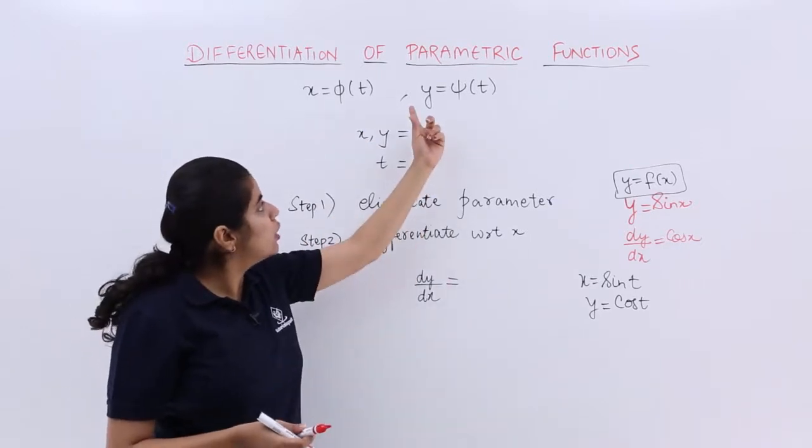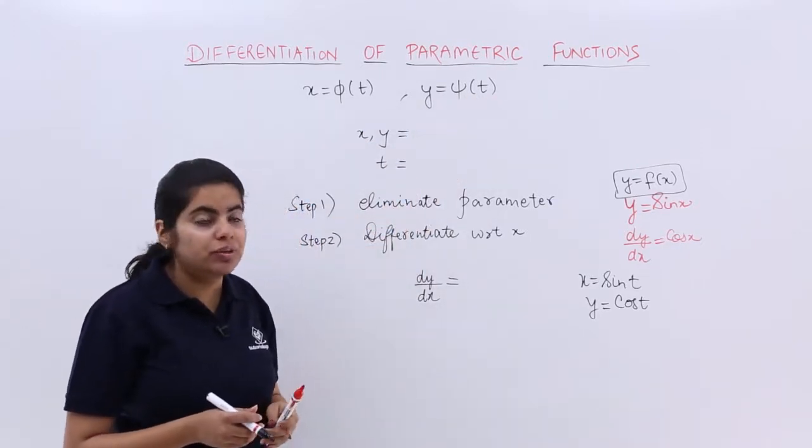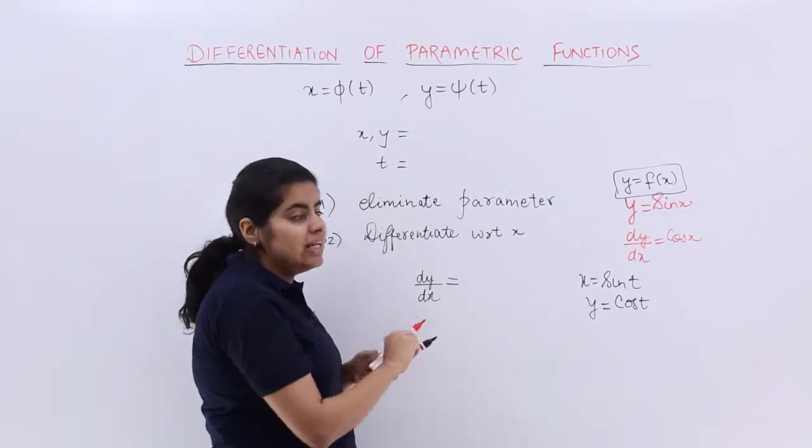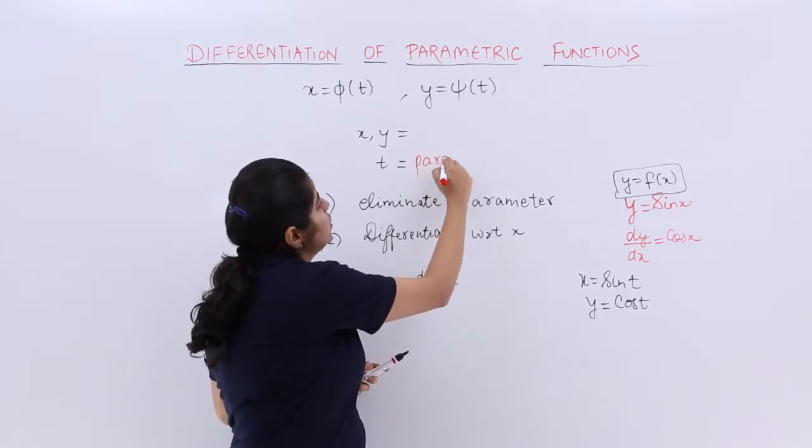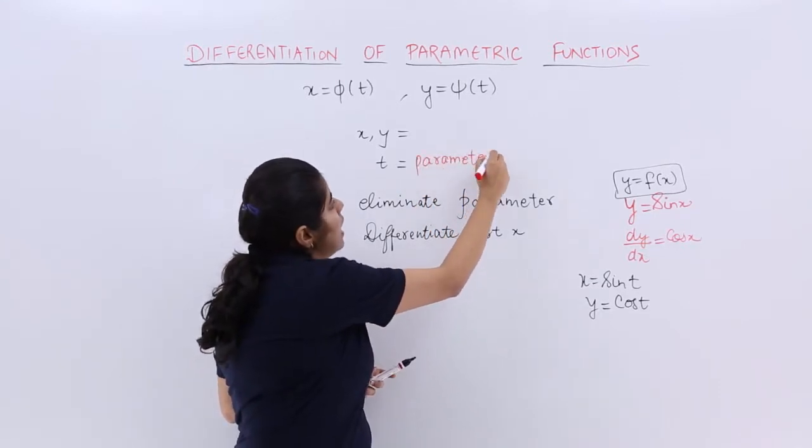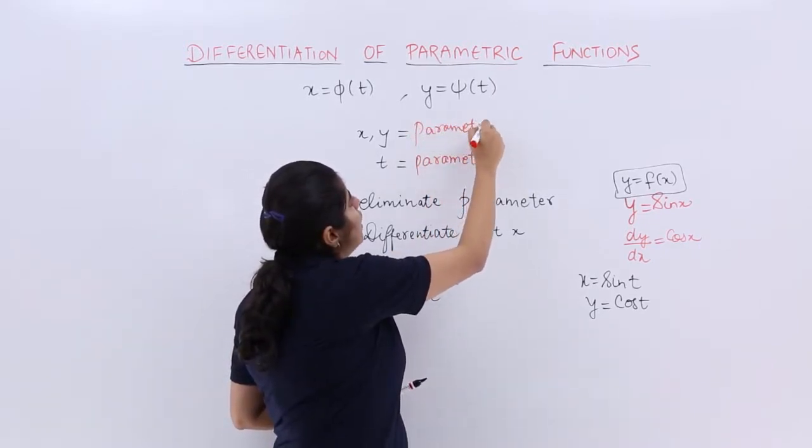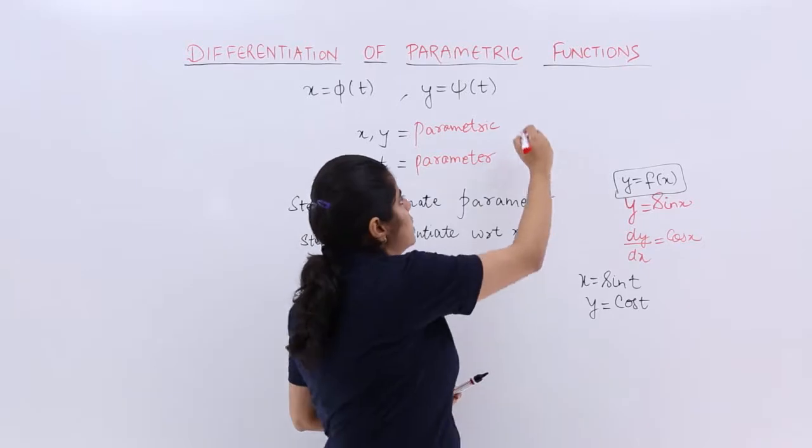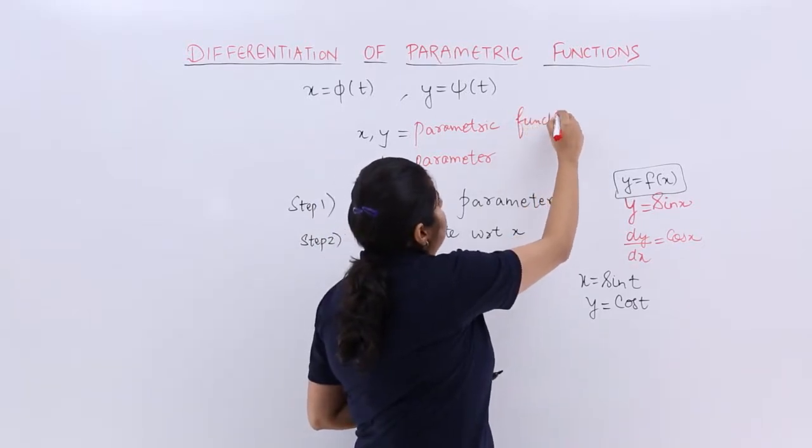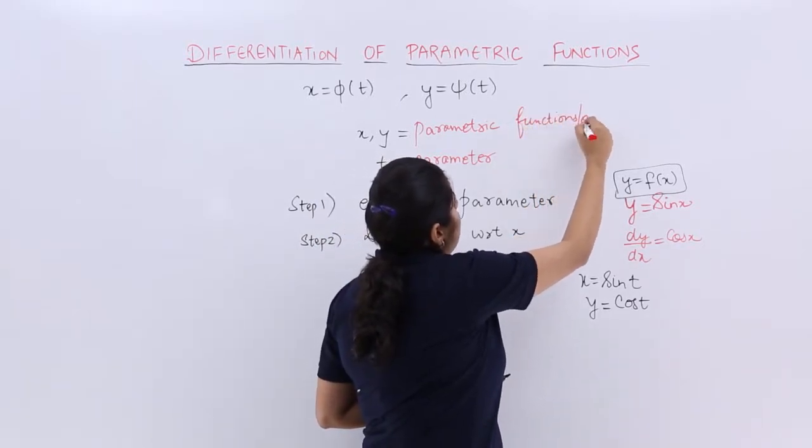If x is a function of t, y is some other function of t, then I say my t is called the parameter and my x and y are called parametric equations or parametric functions.